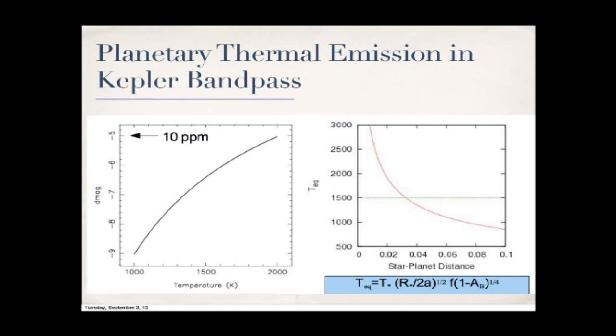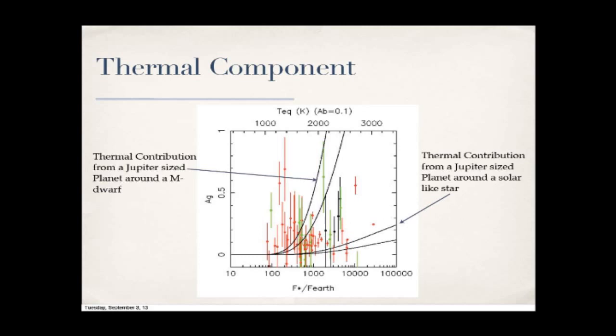Taking these geometric albedo measurements from Kepler and asking how much thermal contribution to expect based on different assumptions: for a Jupiter-sized planet around a solar-like star the thermal contribution can be quite small, whereas for a Jupiter around an M star it can be significantly larger because the M star flux is much less, making the planet's relative flux larger. The geometric albedos you measure are a combination of reflectivity and emission.